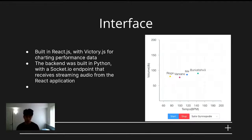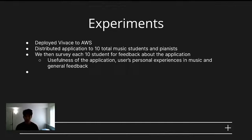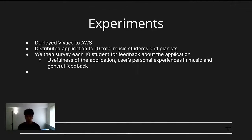This process continues until the user clicks stop. For our experiments, we ended up deploying Vivace to AWS and distributed the application to 10 total pianists. We then surveyed each of the 10 students for feedback on the application with a Google Form. The form covered the usefulness of the application, users' personal experience in music, as well as any other general feedback they may have.